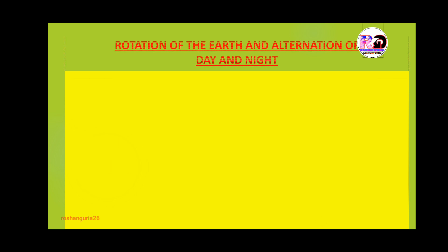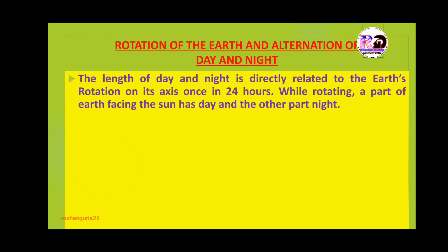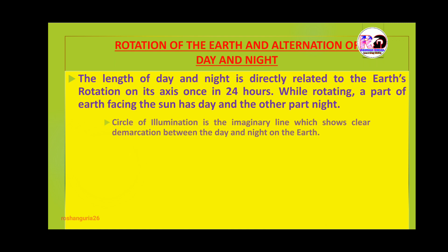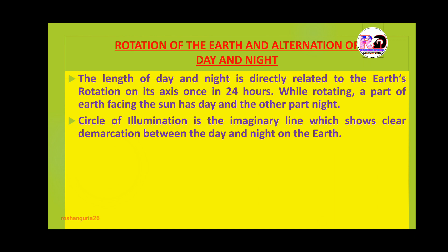The next point to discuss is rotation of the earth and the alteration of day and night. The length of day and night is directly related to the earth's rotation on its own axis once in 24 hours. While rotating, the part of the earth facing the sun has day and the other part has night.